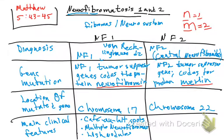Lisch nodules are hamartomas of the iris occurring in neurofibromatosis. Let's look at a picture — you can see all those small lesions on the iris; those are the Lisch nodules.